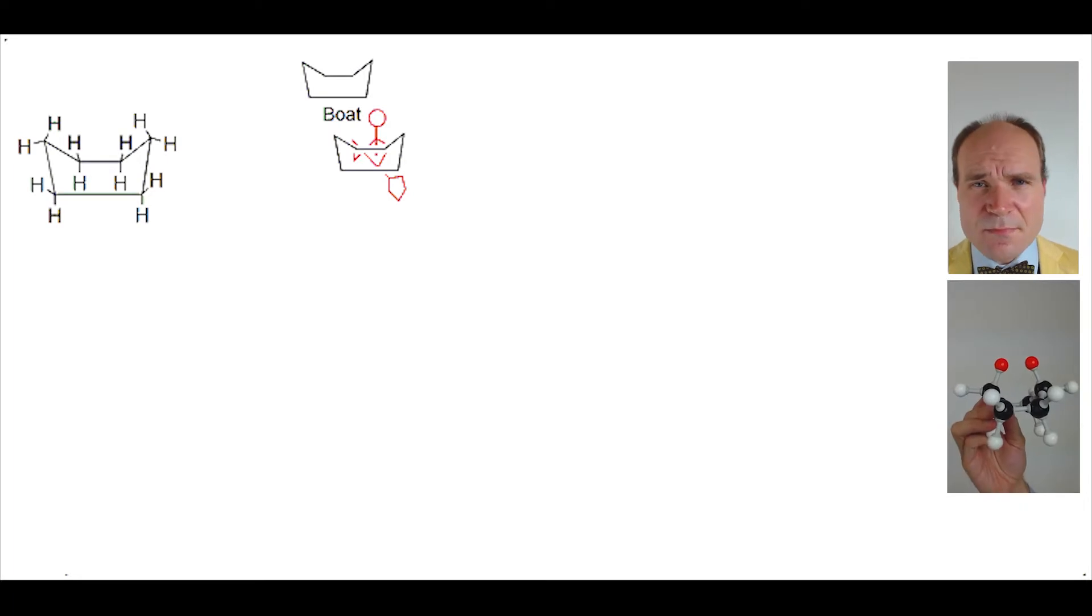The boat conformation looks so like a boat, but it's actually confused this poor stick person and they're trying to row it. I do hope they don't drown. So why doesn't the boat conformation normally appear in the ring flipping process? It doesn't normally appear because it's too high in energy. That extra energy is coming about through various aspects of its structure.